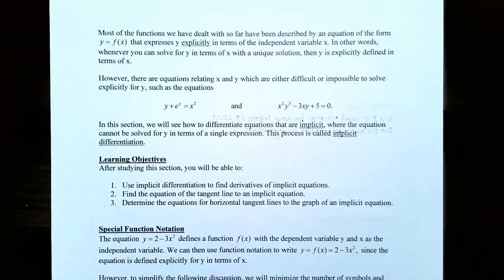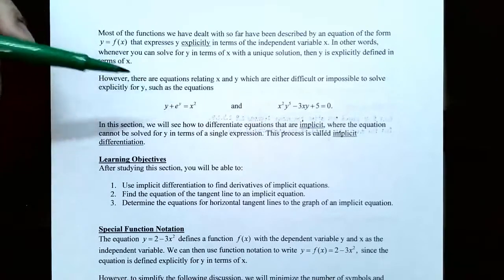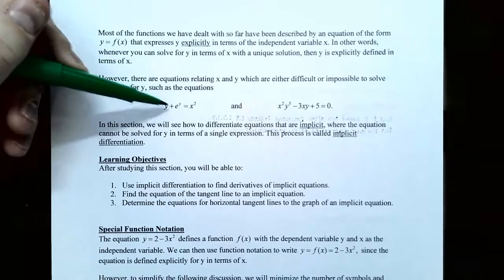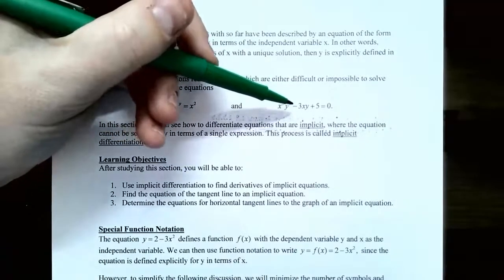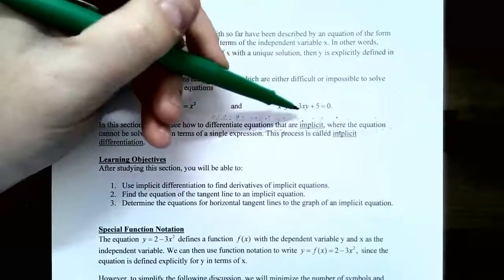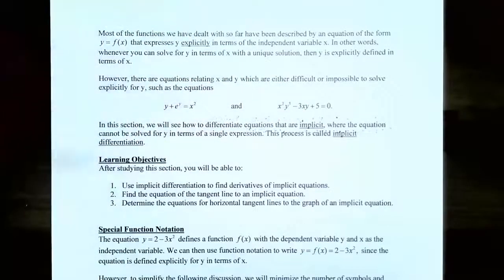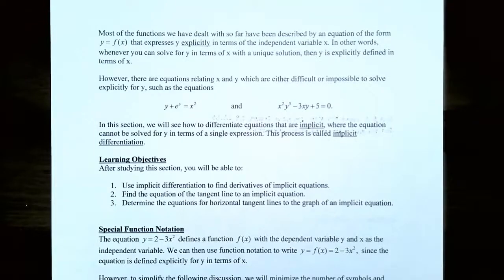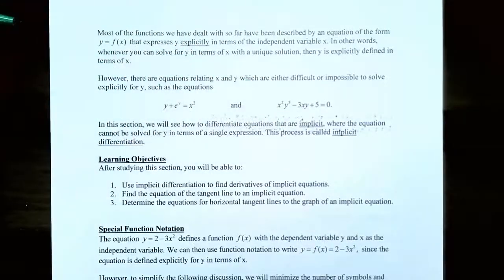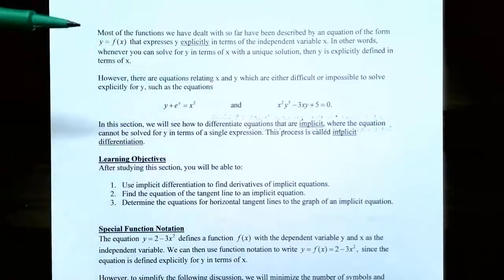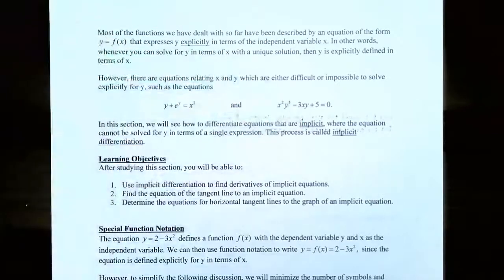Here are a couple examples relating the variables x and y which can either be difficult or nearly impossible to solve explicitly for y, such as these equations: y plus e to the y power equals x squared — how do you solve this when you have y in the exponent? Also, x squared times y to the fifth subtract 3 times x times y plus 5 equals zero, where y appears raised to the fifth power. It's nearly impossible to do so without a computer. These are what's called implicit equations, and finding the derivative of these equations is what's called implicit differentiation.